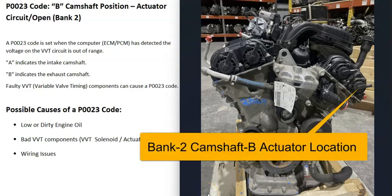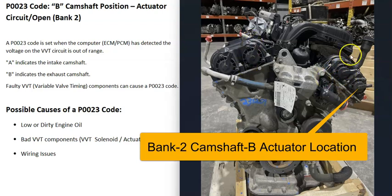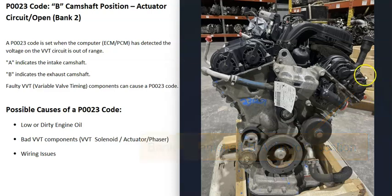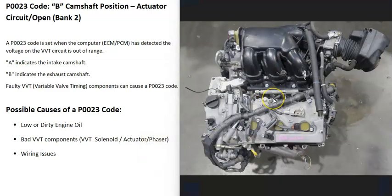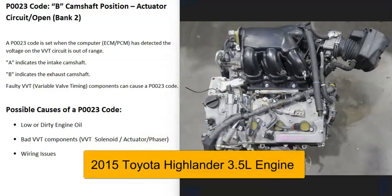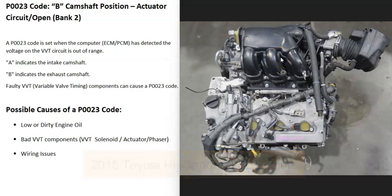Here's a quick example — a 2015 Dodge 3.6-liter engine. This side of the engine is bank one and this side is bank two, and right here is where that variable valve timing actuator is located.